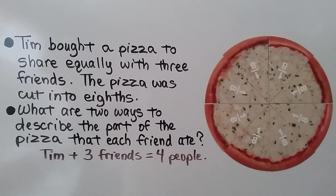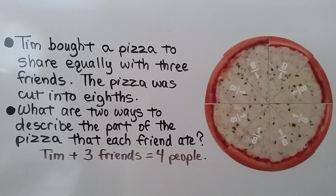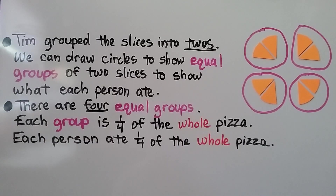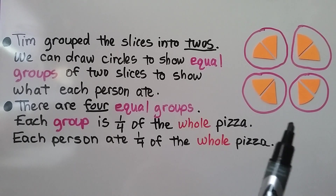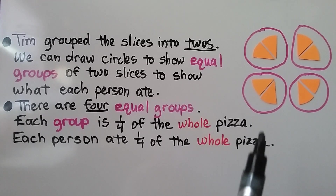Tim bought a pizza to share equally with three friends, and the pizza was cut into eighths. What are the two ways to describe the part of the pizza that each friend ate? Tim plus three friends equals four people. So we have a pizza cut into eighths that we need to share with four people. Tim grouped the slices into twos, and we can draw circles to show equal groups of two slices. There are four equal groups, and each group is one-fourth of the whole pizza. So each person ate one-fourth of the whole pizza.